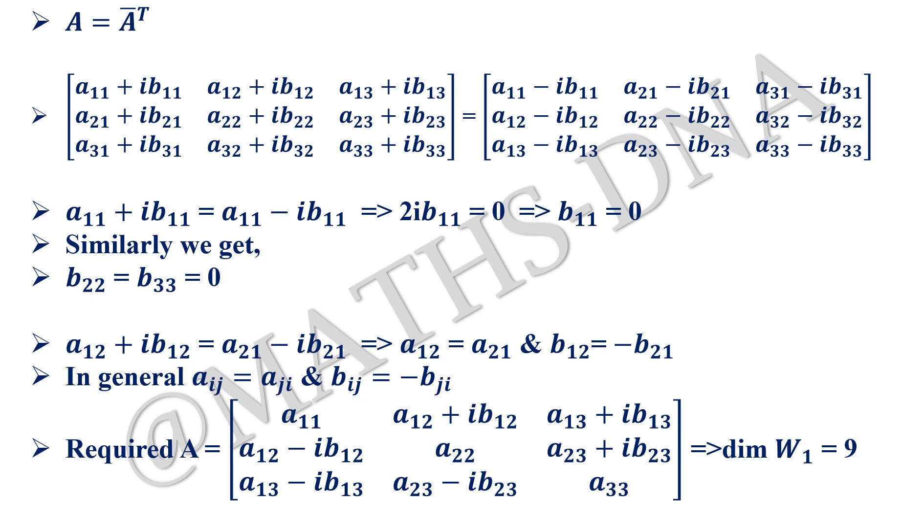Thus the required A will be: on diagonal we only have the real part, that is a₁₁, a₂₂, and a₃₃, and above the diagonal a₁₂ + ib₁₂ that will be similar to a₁₂ - ib₁₂. The sign of the complex part changes. Thus there are total 9 independent entries in W₁.